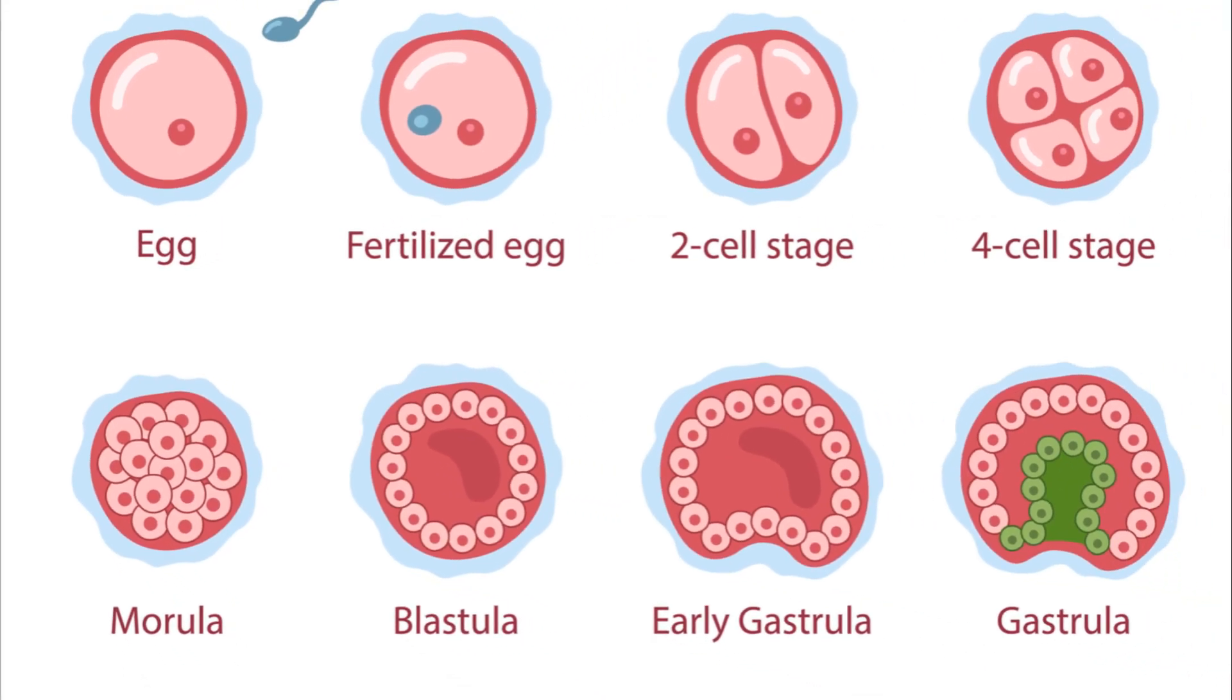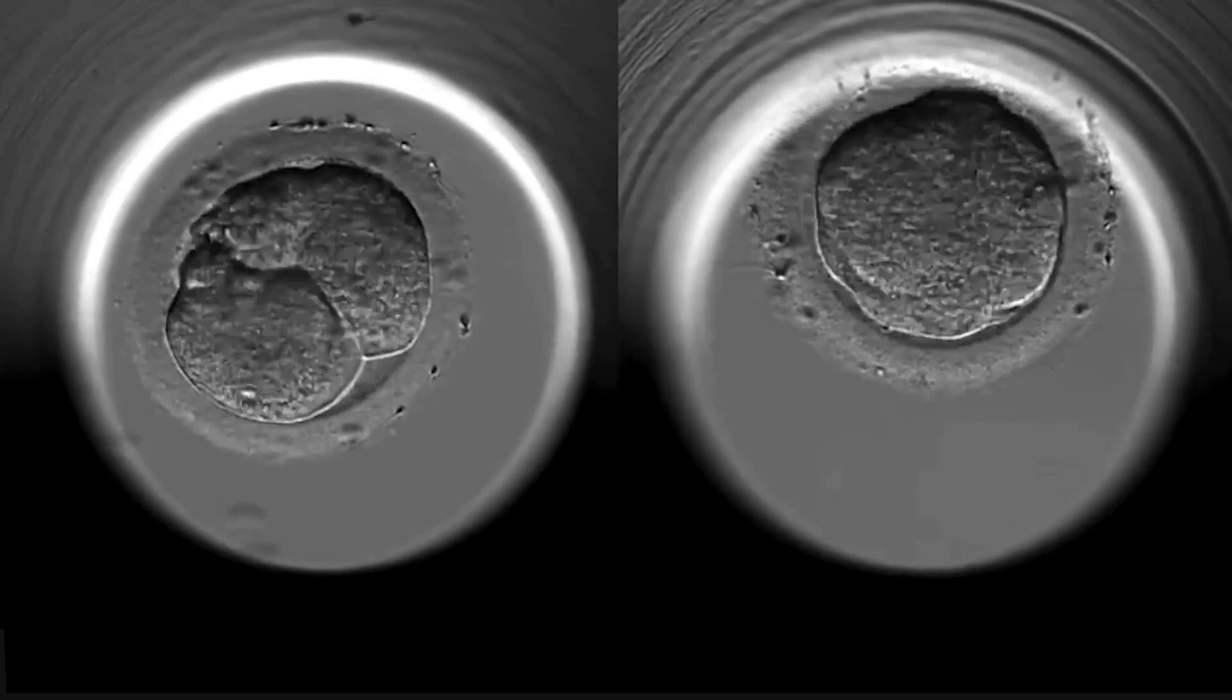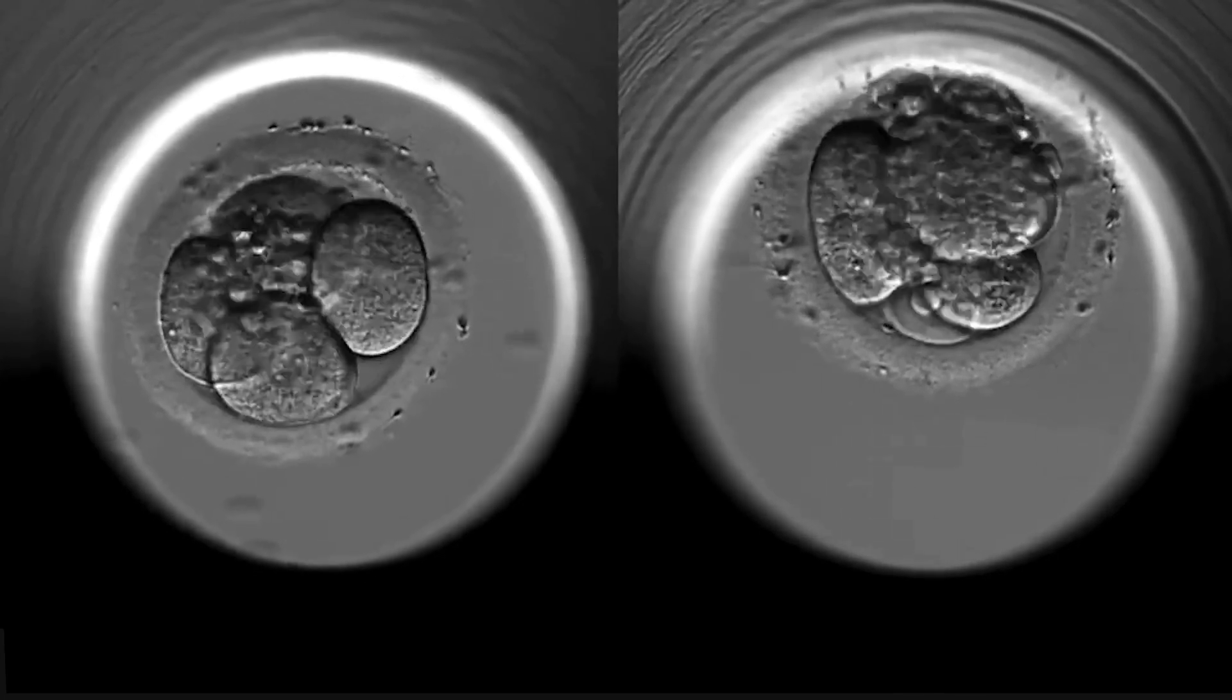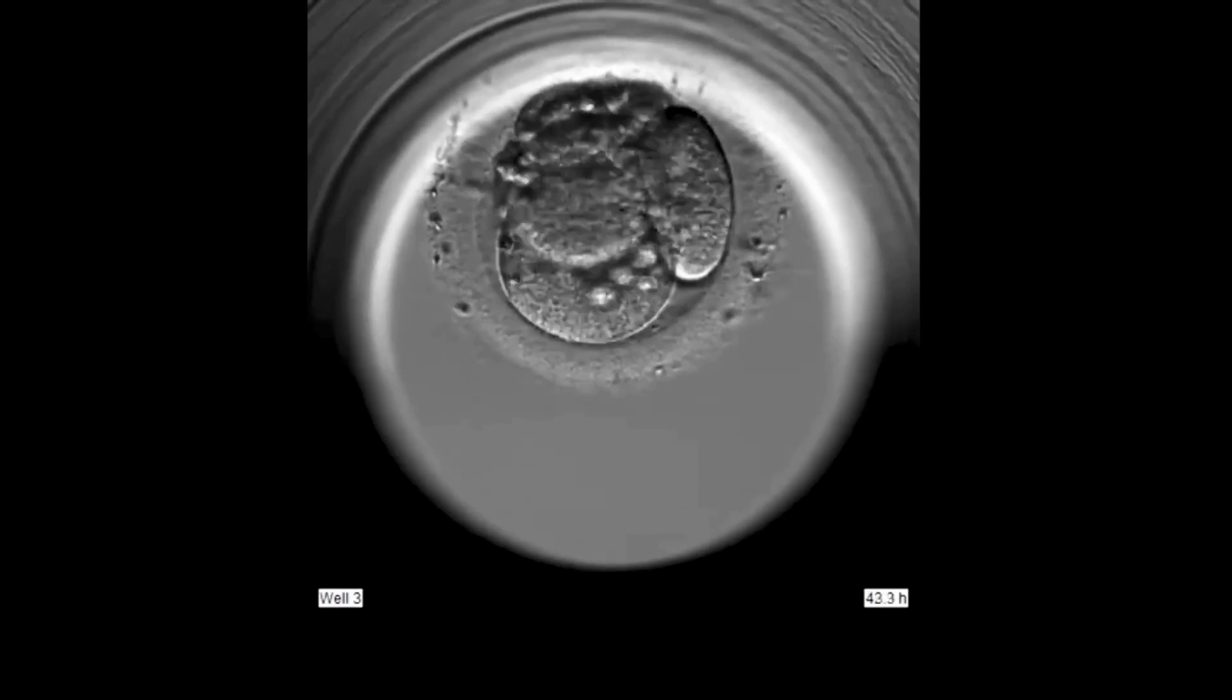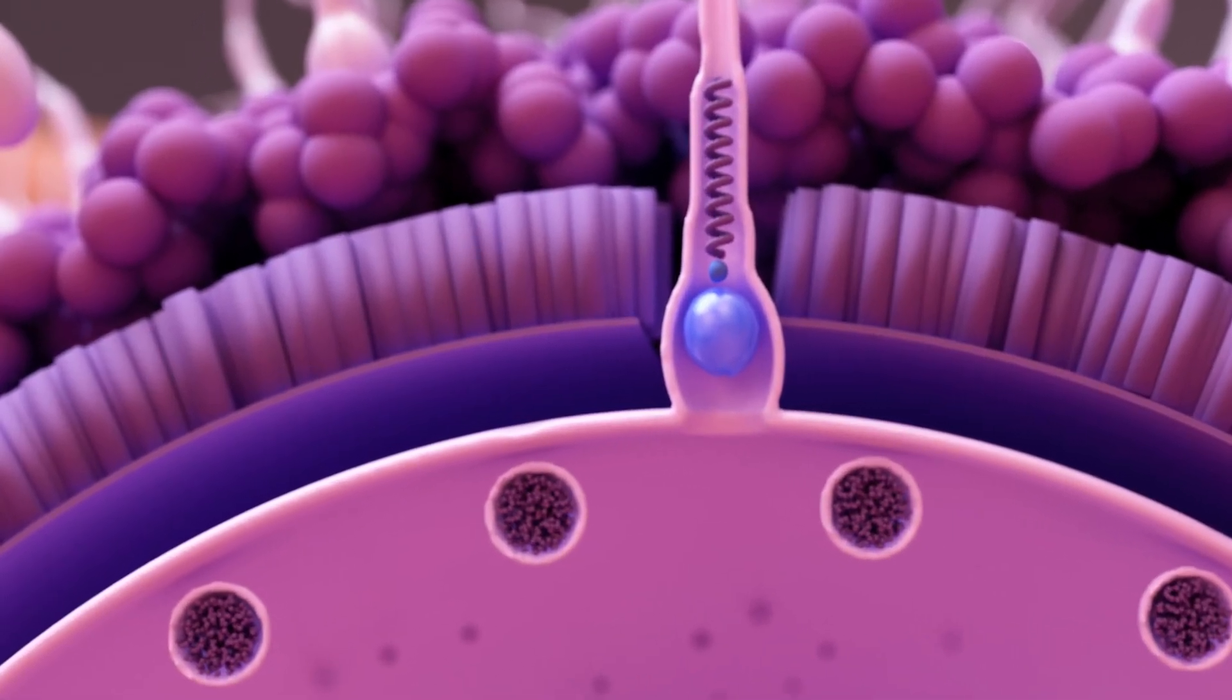By day five, the embryo, now called a blastocyst, is ready to implant into the uterus, marking the start of pregnancy. This intricate journey from oocyte to embryo is a testament to the breathtaking complexity of life.